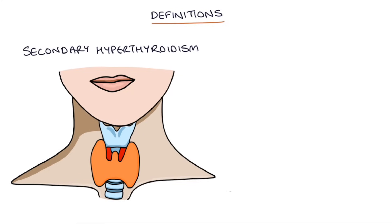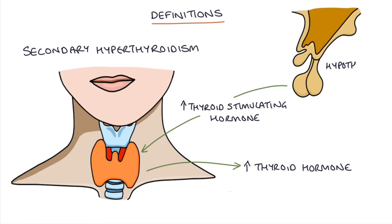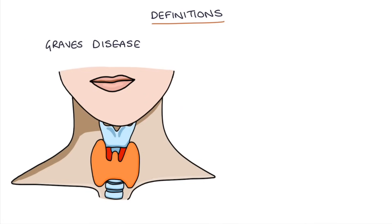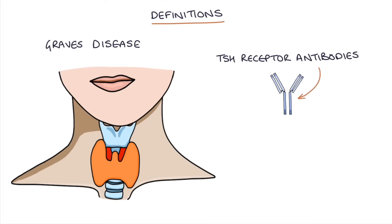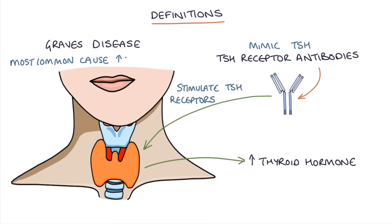Secondary hyperthyroidism is a condition where the thyroid is producing excessive thyroid hormone as a result of overstimulation by thyroid stimulating hormone. So the pathology is in the hypothalamus or the pituitary producing too much TSH, and that's what's causing the high thyroid output. Graves disease is an autoimmune condition where TSH receptor antibodies cause hyperthyroidism by mimicking TSH, stimulating TSH receptors in the thyroid gland to secrete thyroid hormone. This is the most common cause of hyperthyroidism.